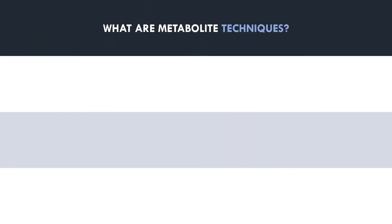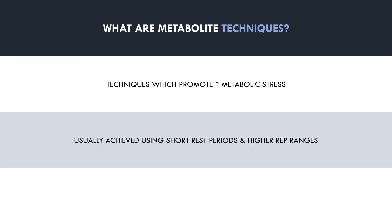Metabolite techniques are forms of resistance training which promote greater metabolic stress to the target muscle. This is usually conducted by shortening rest periods or performing higher rep ranges. Some examples include drop sets, myoreps, rest pause, supersets, blood flow restriction, and more. The exact form doesn't really matter significantly — the point is that all of these techniques promote significant metabolic stress by limiting rest or using higher rep ranges.